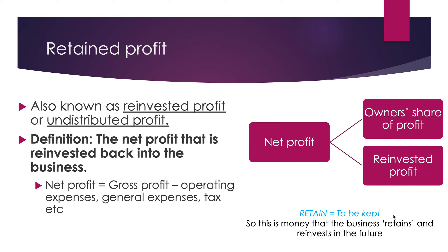For case studies on retained profit, consider McDonald's and Woolworths. In 2018, McDonald's recorded a net profit of $5.9 billion US dollars and decided to reinvest $2.6 billion of those dollars. That retained profit could have been used for refurbishment of restaurants, implementation of self-serve checkouts, or opening new stores. In 2019, Woolworths recorded $3.968 billion in retained earnings — almost $4 billion kept to use for business purposes.